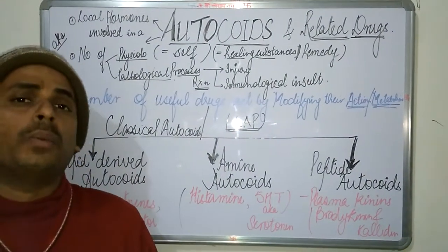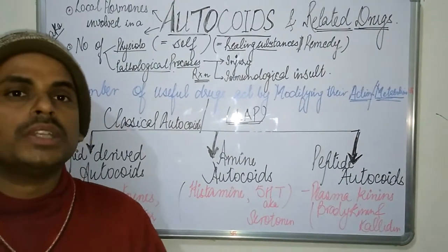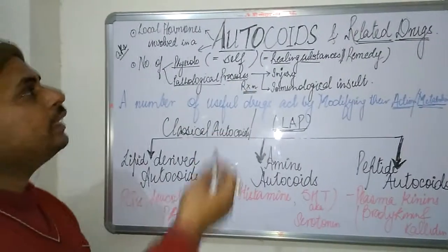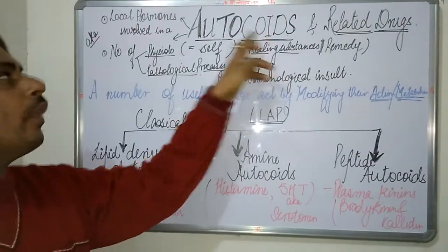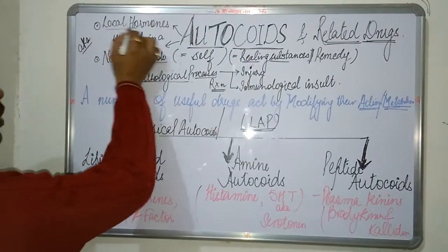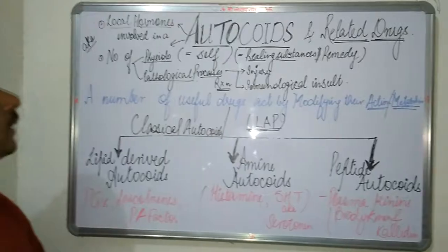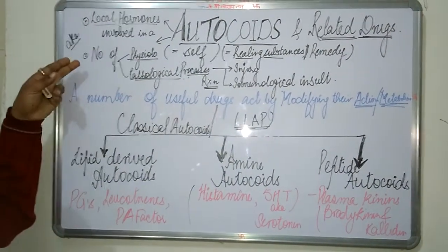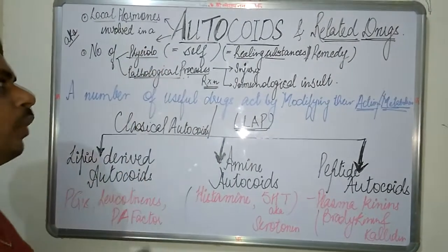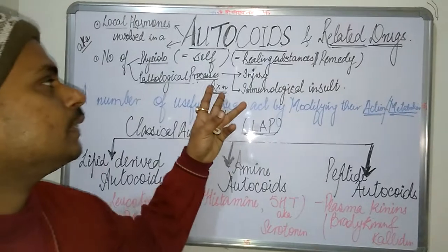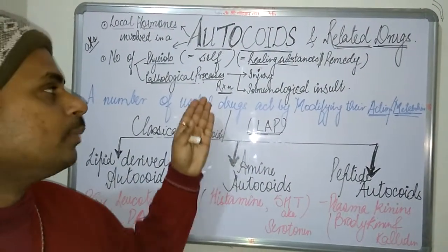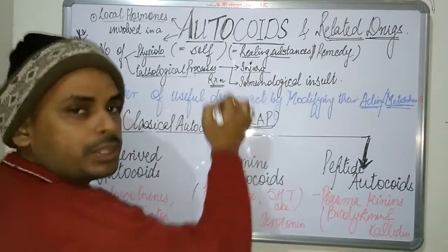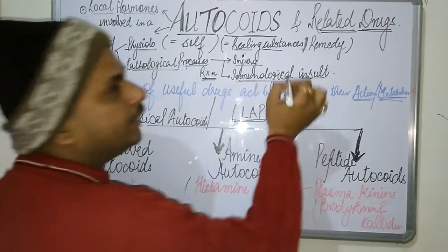Autocoids are a wide variety of chemical substances which are released into the human body at the site of an injury or an insult. Autocoids also act as local hormones and are therefore also called local hormones. They are involved in a wide variety of physiological and pathological processes, such as when there is an injury or an immunological insult to the body.